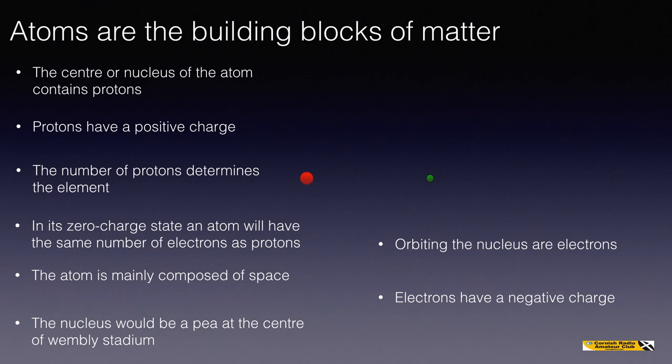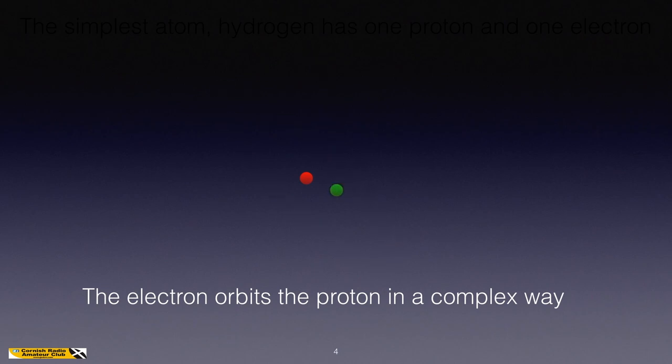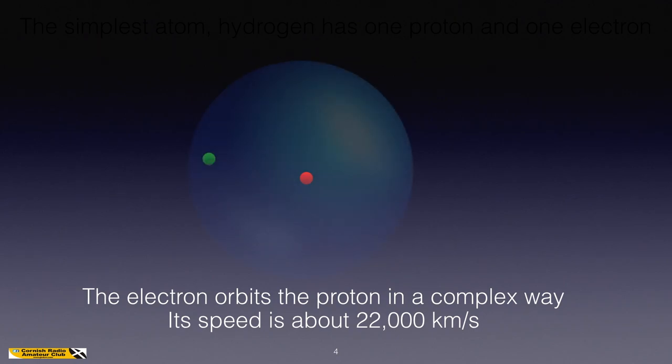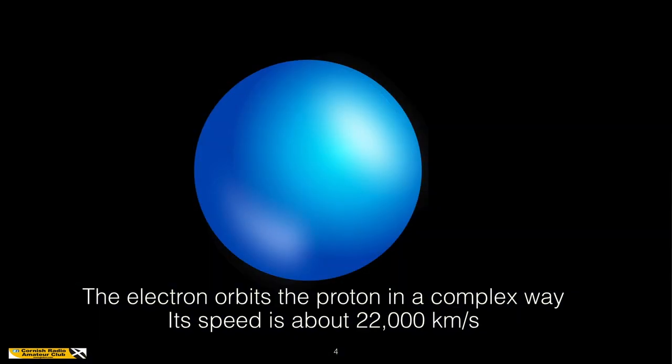So this diagram here, or this animation, shows an electron orbiting a nucleus. And here we have a nucleus of one proton with one electron. And it isn't just a simple planet and sun orbit, it's a complex orbit, and the speed is very, very fast. It's about 22,000 kilometres per second. So it is not as fast as the speed of light, nowhere near, but it's still very, very, very fast.